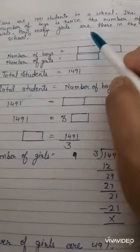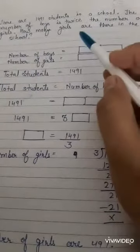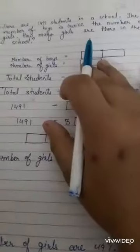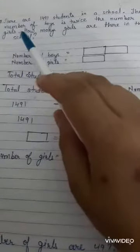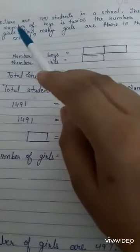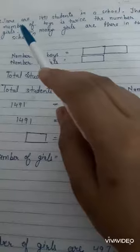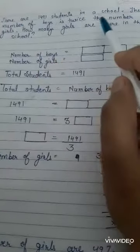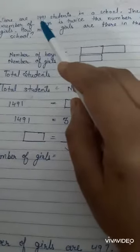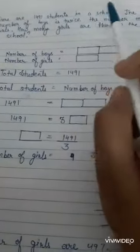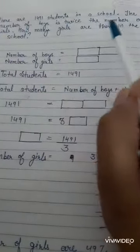So today we are going to use it in this question. In the question it is given that total number of students in the school are 1491, and number of boys is twice the number of girls.